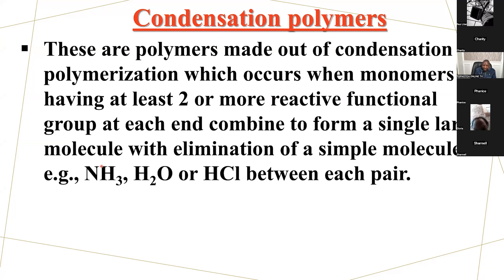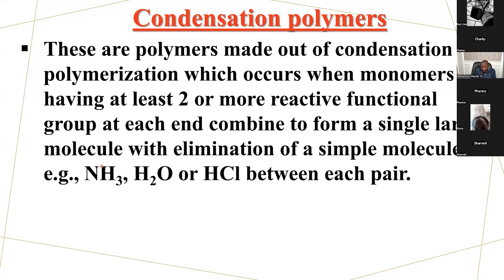Polyamide is whereby we have nylon 6-6, and the polyester, where we have Terylene. Let's go through the formation of nylon 6-6, which is a polyamide. Listen very carefully.